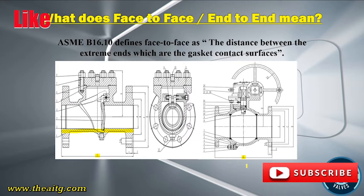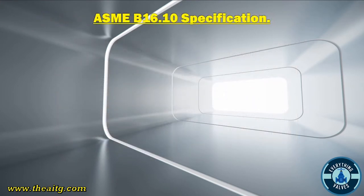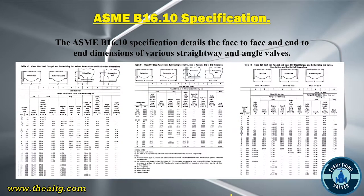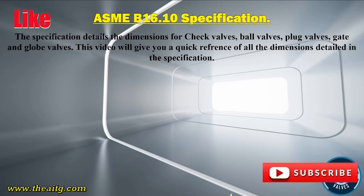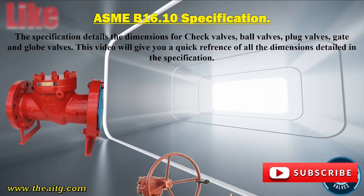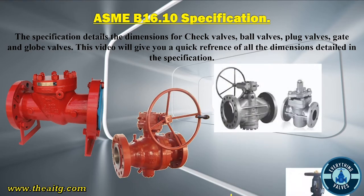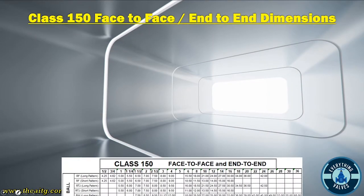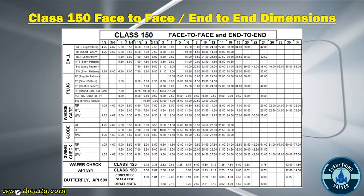ASME B16.10 specification details the face-to-face and end-to-end dimensions of various straightway and angle valves. The specification details the dimensions for check valves, ball valves, plug valves, gate valves, and globe valves. This video will give you a quick reference of all the dimensions detailed in the specification.